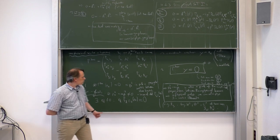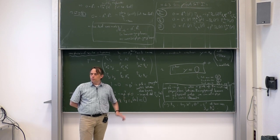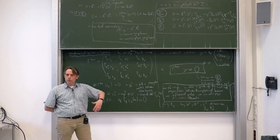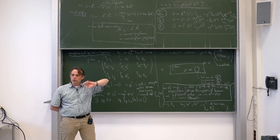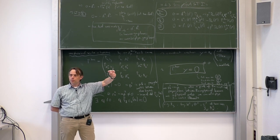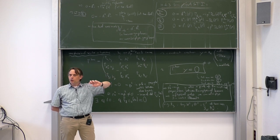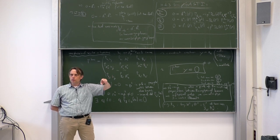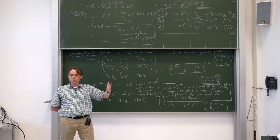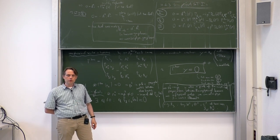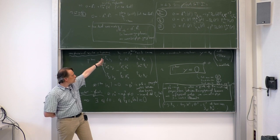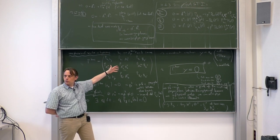Second, there is the Goldstone boson equivalence theorem — an interesting statement that physical cross-sections for longitudinally polarized physical gauge bosons on the one hand, and amplitudes with unphysical Goldstone bosons on the other hand, become equal in the high-energy limit. Goldstone bosons, even though unphysical, can be calculated more easily because they are scalars, giving simplification for certain calculations. The proof of this Goldstone boson equivalence theorem can also be done using similar methods as the ones discussed here.